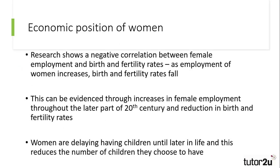First of all, we will look at the economic position of women. Research shows a negative correlation between female employment and the number of births. As more women are working in contemporary society, less children are being born. As women are focusing on their careers, they are either delaying childbearing until later in life, or choosing to have less or no children. This can be evidenced by the increase in female employment over the latter part of the last century and the early part of this century, compared to the declining birth and fertility rates witnessed as a result.